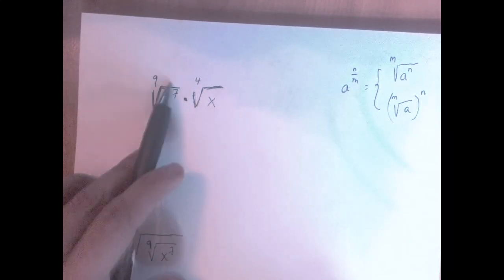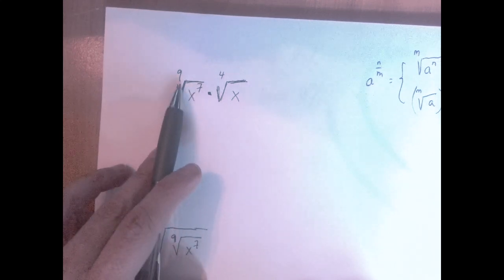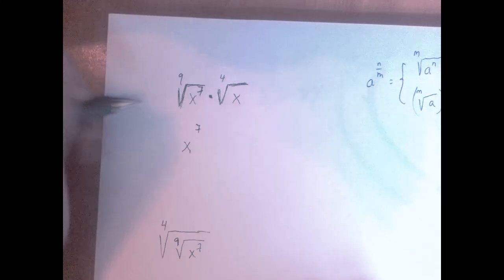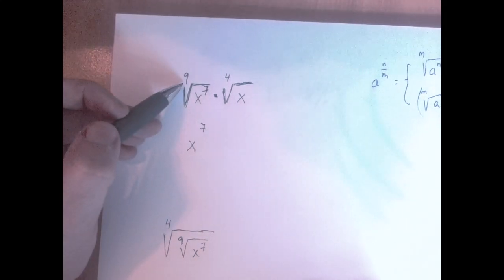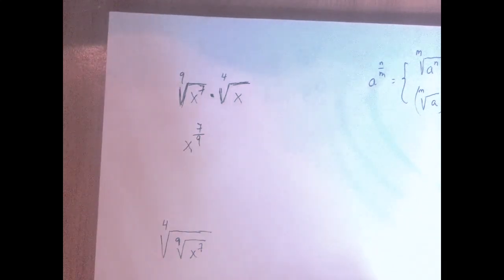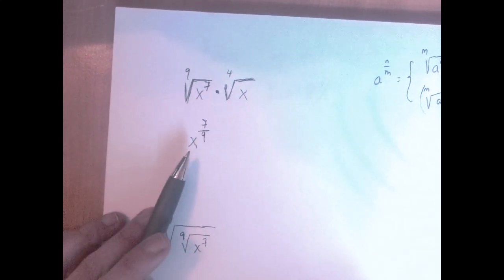We have two expressions multiplied here. x to the 7th power, 9th root of x is x to the, and then the exponent goes up, and the radical, the root number is the denominator. So 9th root of x to the 7th is the same as x to the power of 7 over 9.